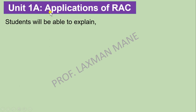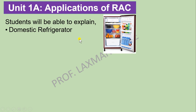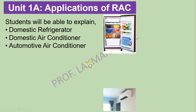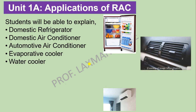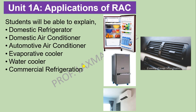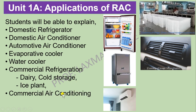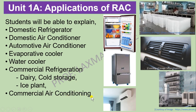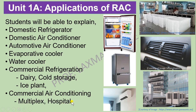The first unit has two parts. Part A covers Applications of RAC. In this you will be able to explain the construction and working of Domestic Refrigerator, Domestic Air Conditioner, Automotive Air Conditioner, Evaporative Cooler, Water Cooler, and Commercial Refrigeration including Dairy, Cold Storage, and Ice Plant. In Commercial Air Conditioning, we will study about Multiplex and Hospital Air Conditioning.